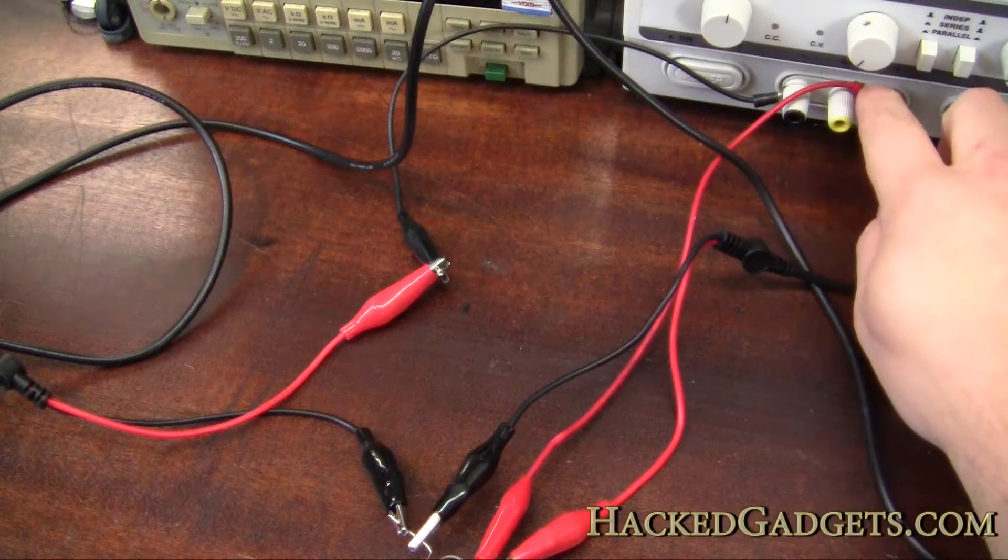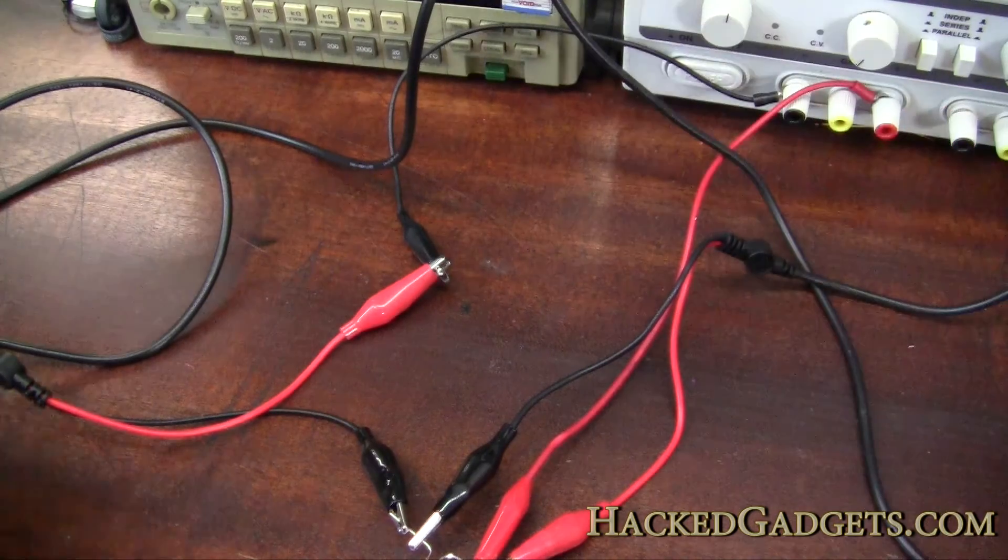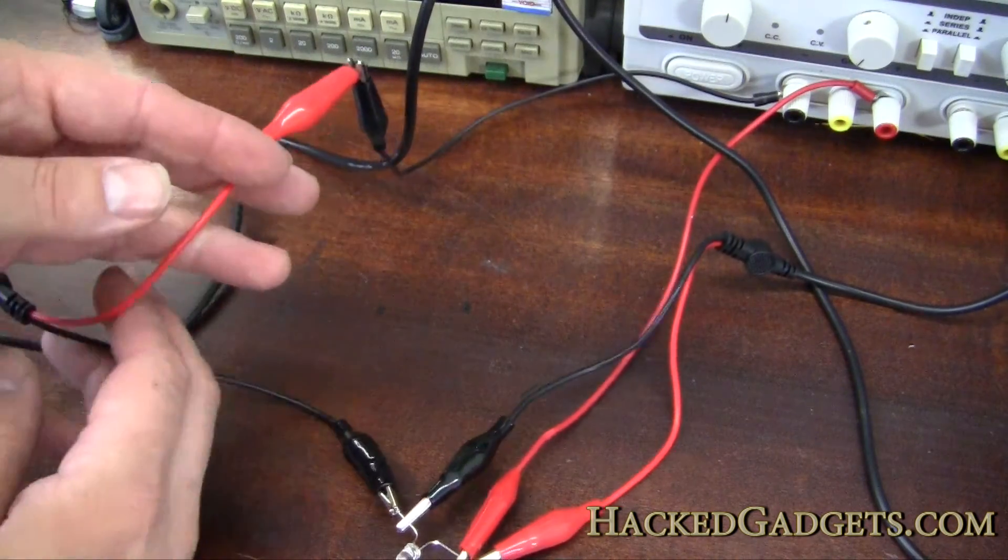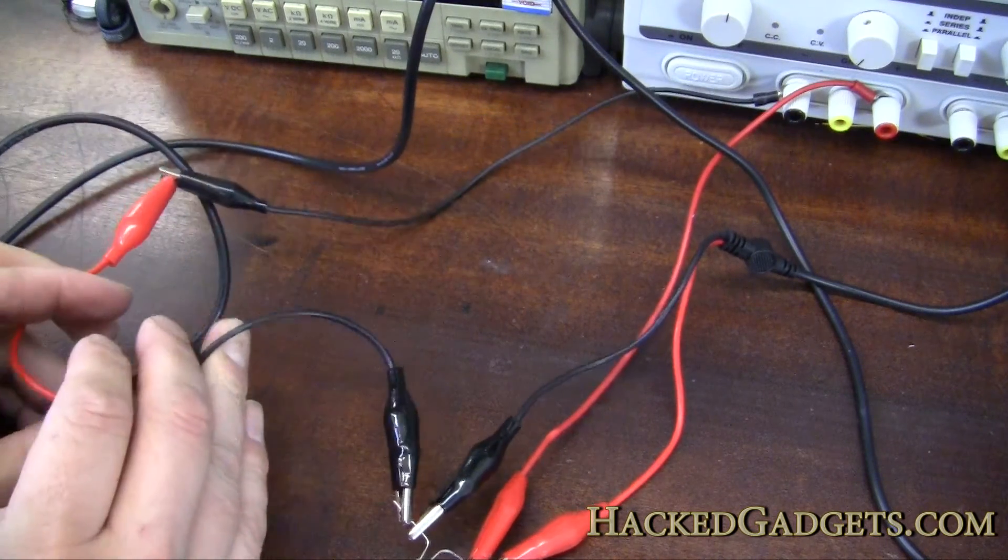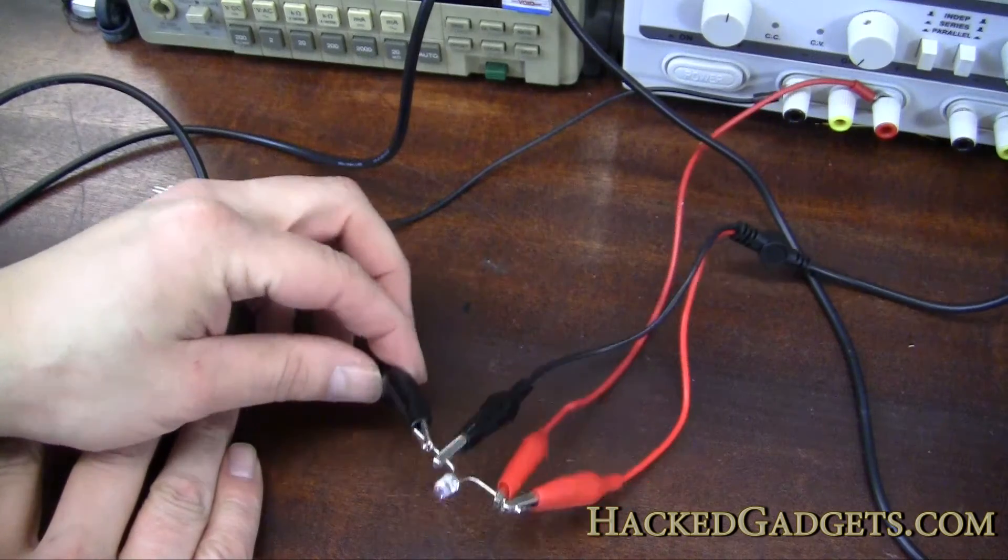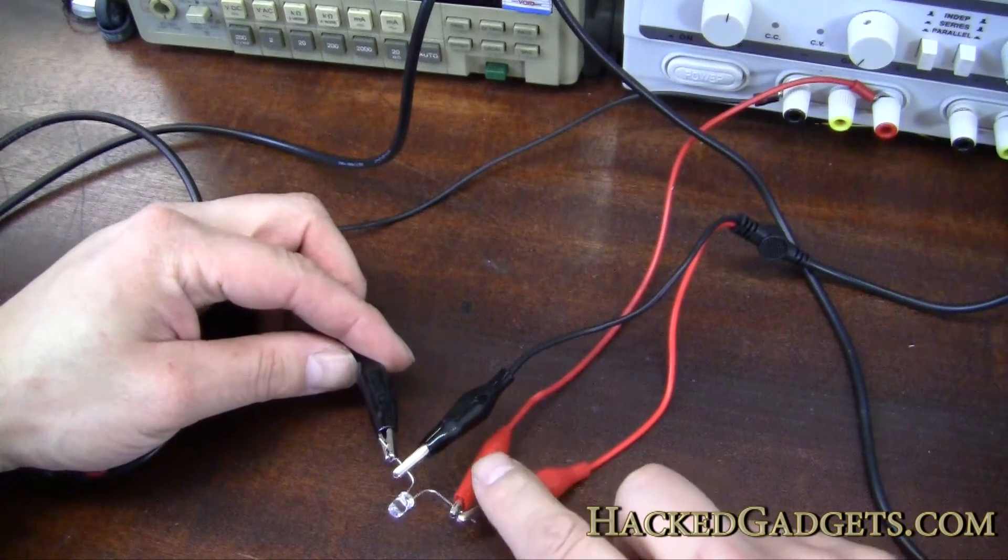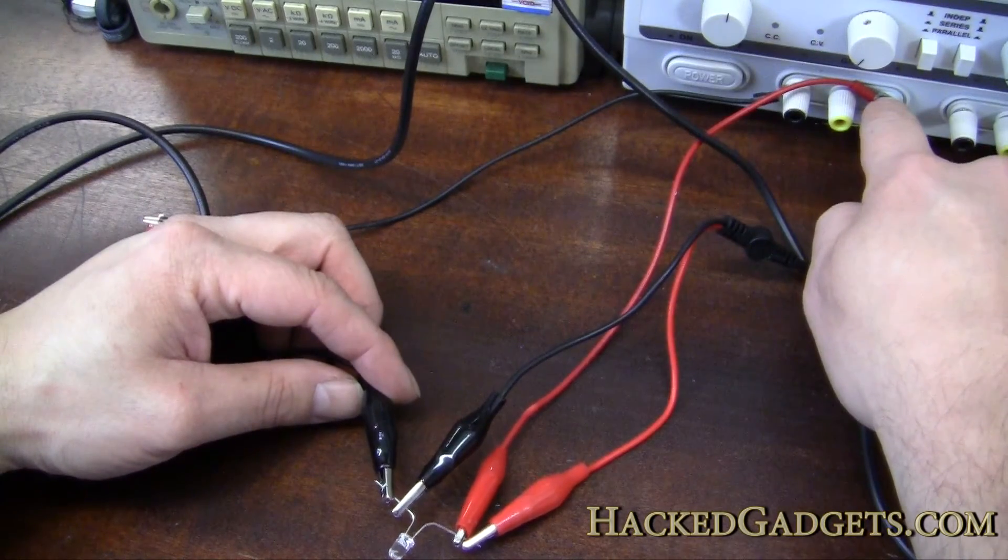Okay, so what we have here is positive and negative coming out of a variable power supply. This negative lead goes over to here and this connection basically goes to an ammeter. It returns from an ammeter here and gets connected to the negative of the LED. The positive of the LED gets connected directly to positive of the power supply.